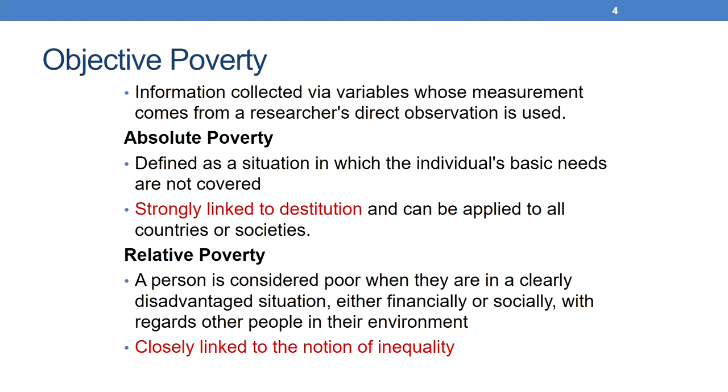When we refer to the number of people living below $1 a day, we are essentially referring to absolute poverty, which can apply to all countries or all societies. A person considered poor under this criterion is classified in the same way throughout the world. A related concept is relative poverty: a person is considered poor when they are in a clearly disadvantaged situation — financially or socially — relative to other people in their environment. The focus here is mostly on the notion of inequality.